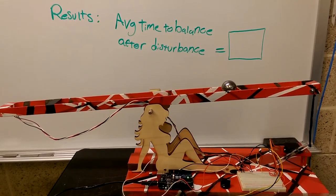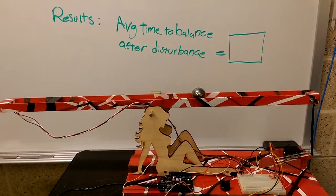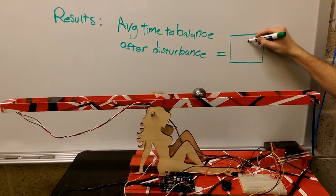Additionally, the system was able to return to a state of equilibrium after a disturbance was introduced. An average time of 5 seconds was required to do this when a minor disturbance occurred.